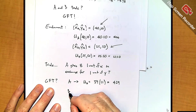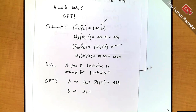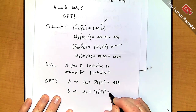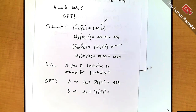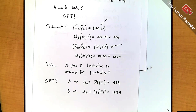Now let's check for B. After the trade, B no longer has 25 and 50 — B has 26 units of X and 49 units of Y. Plugging that into the utility function: 26 times 49 is 1274. That's good news — 1274 is higher than 1250. So utility goes up for B as well.